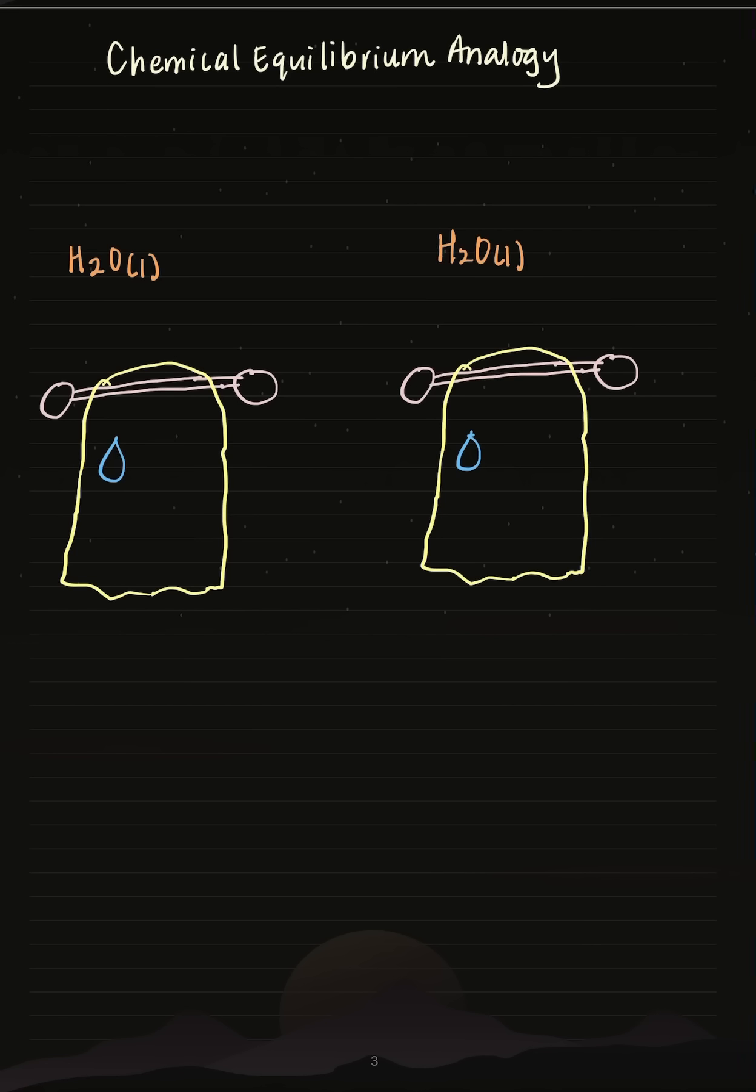If you've started learning about chemical equilibrium, this analogy should help you understand the concept a bit better. Let's say I have a wet towel that's sitting on a towel rack.